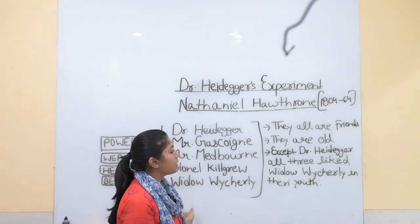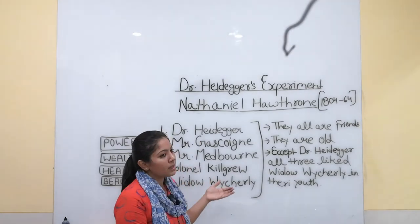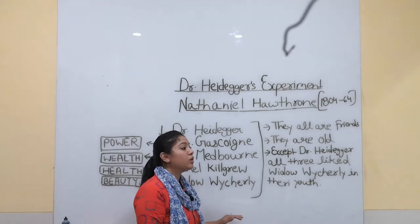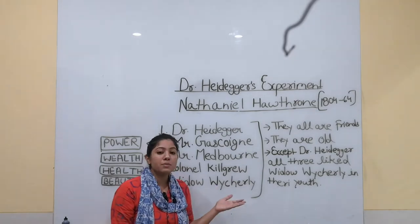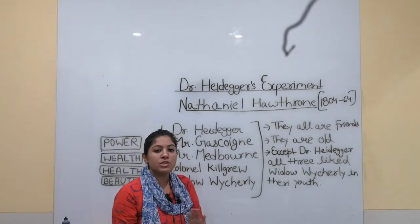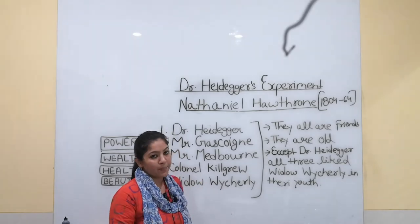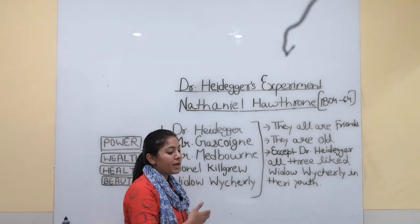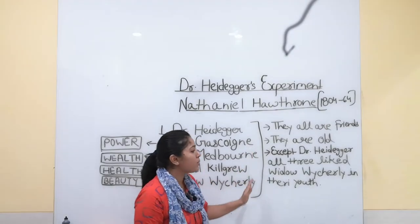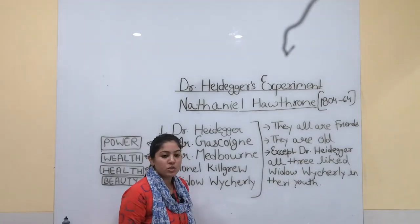Everyone wants to drink the water to regain their youth. Dr. Heidegger says he wants to conduct the experiment on them. But Dr. Heidegger warns them: if you drink the water, keep in mind the mistakes you made in your past — do not repeat them. Like in a time machine movie, you can go back to your past and by thinking about it, you will not repeat the mistakes again, so that your old age will improve.